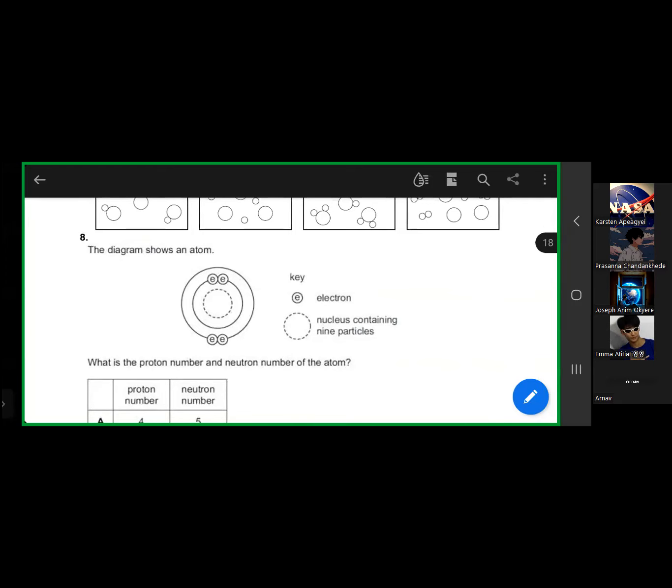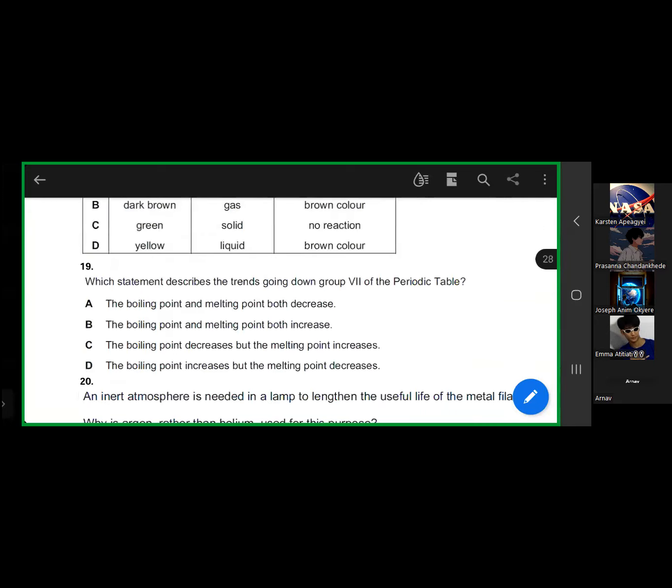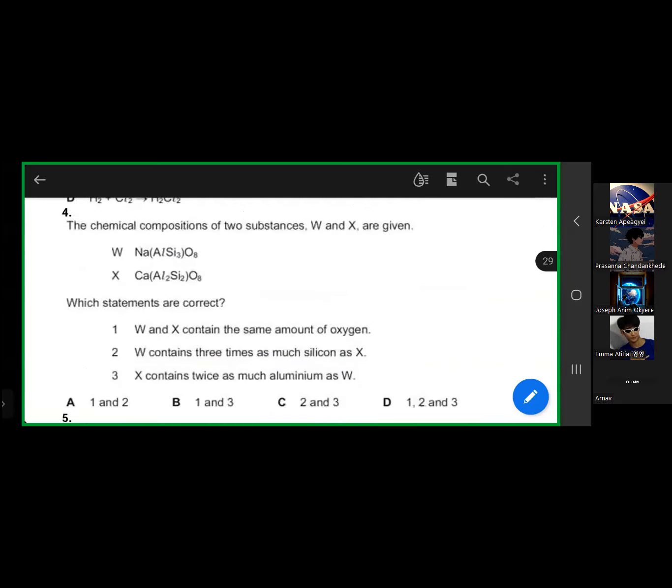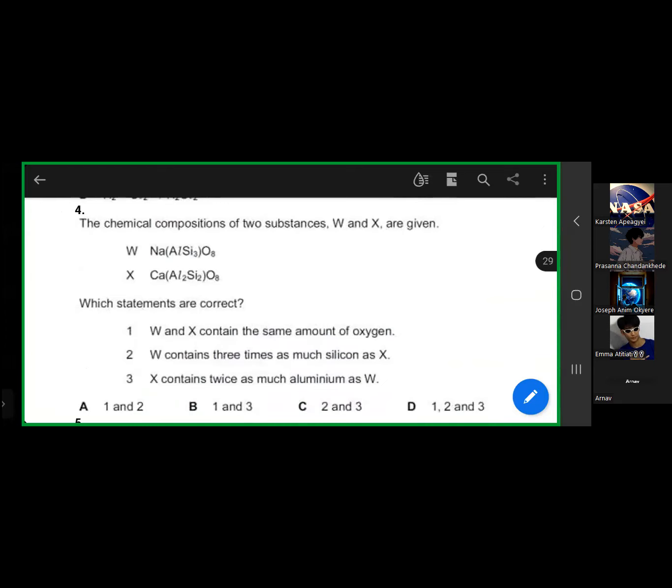Okay, this one. Is it this one? Yeah, it's that one. What's your problem? The question says the chemical compositions of two substances W and X are given.